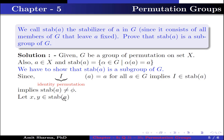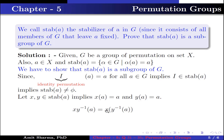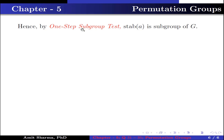Let X and Y belong to Stab(A). This implies X(A) = A and Y(A) = A. Now, XY^(-1)(A) = X(Y^(-1)(A)). Since Y(A) = A, multiplying both sides by Y^(-1) gives Y^(-1)(A) = A. So X(Y^(-1)(A)) = X(A) = A. This implies XY^(-1)(A) = A, so XY^(-1) belongs to Stab(A). Hence, by the one-step subgroup test, Stab(A) is a subgroup of G.